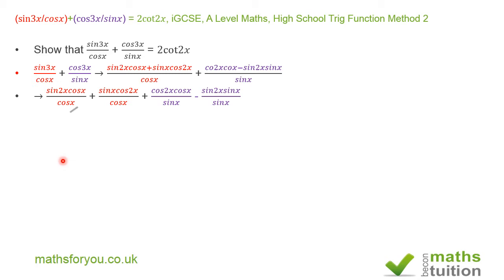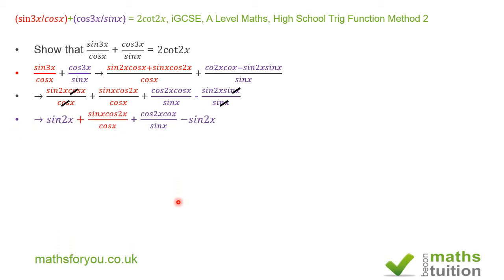For the extreme left-hand term, the cos(x) and cos(x) will cancel out. For the extreme right-hand term, the sin(x)'s will cancel out. So we then end up with sin(2x) plus sin(x)cos(2x)/cos(x), plus cos(2x)cos(x)/sin(x) minus sin(2x).